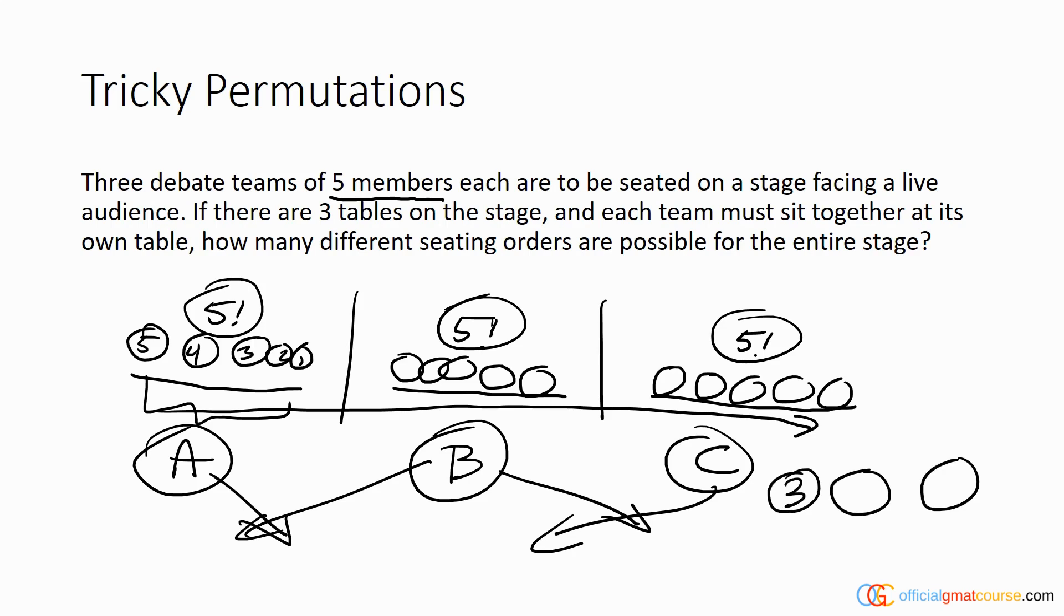We have three spots, so the permutation for the groups is going to be six different ways in which we can arrange the groups. If we multiply the six ways we can arrange the groups times 5!×5!×5!, we will get our solution.